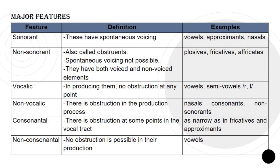Vocalic: in producing vocalics, there's no obstruction at any point. These are vowels, semi-vowels, r, and l. Non-vocalic has an obstruction in the production process; these are nasals, consonants, and non-sonorants. Consonantal: there is obstruction at some points in the vocal tract for consonantals, as narrow as in fricatives and approximants. Non-consonantal: vowels are non-consonantals — no obstruction is possible in their production.